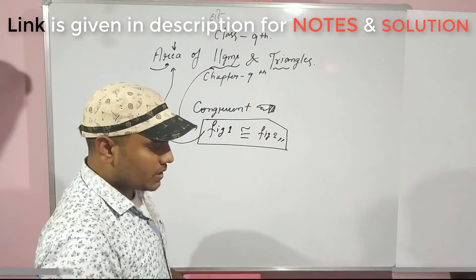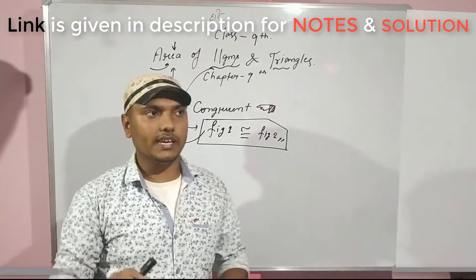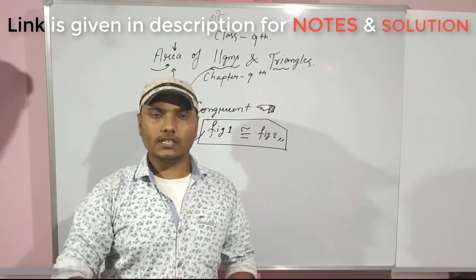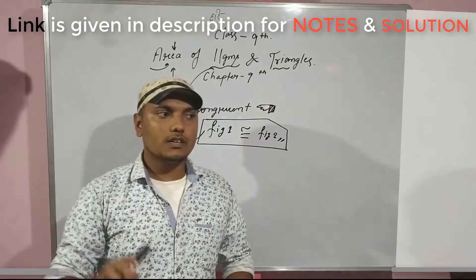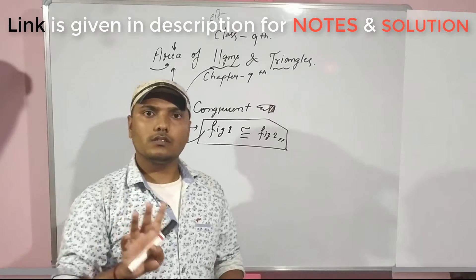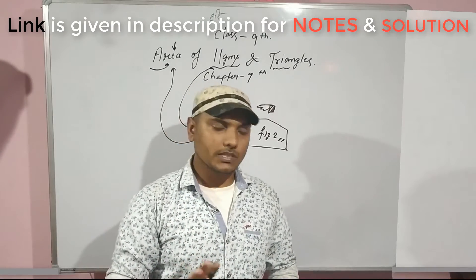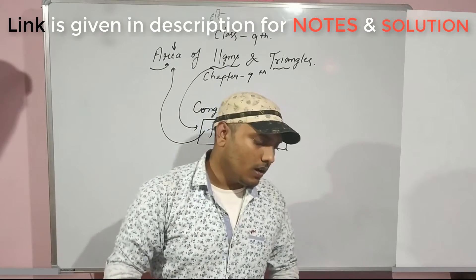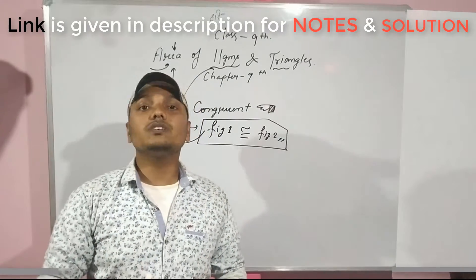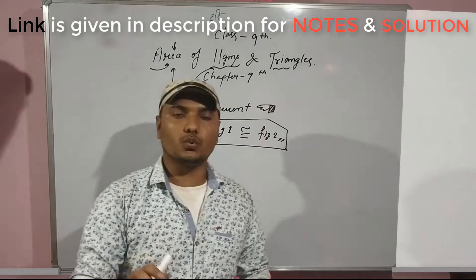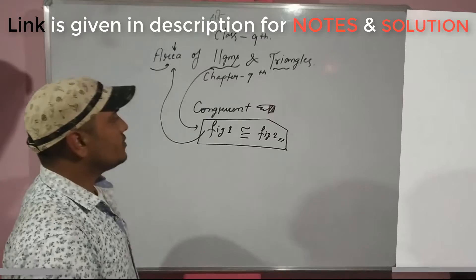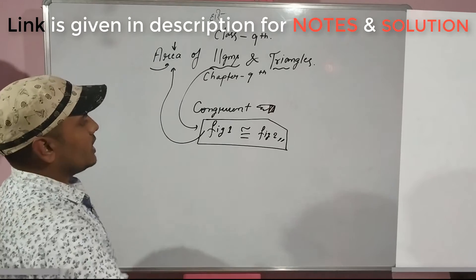If two figures A and B are congruent, they must have equal areas. However, the converse of this statement is not true.